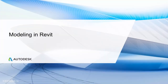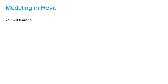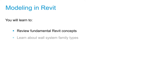Welcome to Lesson 2 of the Certification Prep Course for the Autodesk Certified Professional Revit for Architectural Design Exam. In this lesson, we will review fundamental Revit concepts and learn about the wall system family types, including basic walls, stacked walls, and curtain walls.